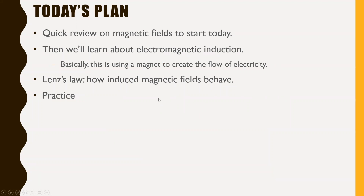Basically, to make it simple right off the top: electromagnetic induction is where you use a magnet — or at least a magnetic field — to create the flow of electricity. We are inducing some electricity through using a magnet. We'll also look at something called Lenz's law, which is how induced magnetic fields behave. That's going to be quite a weird one. And then we'll have some time for practice.